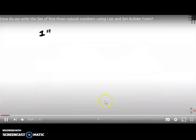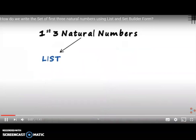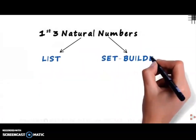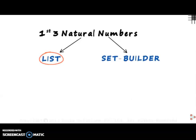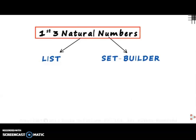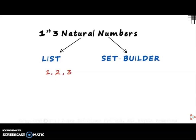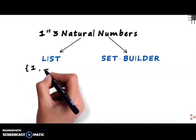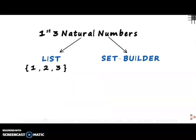Let us try to write the set of the first three natural numbers using the listing and set builder method. In the listing method, the first three natural numbers are 1, 2, and 3. We open the bracket, write 1, 2, and 3 separated by commas, and close the bracket. This is the listing or roster method.